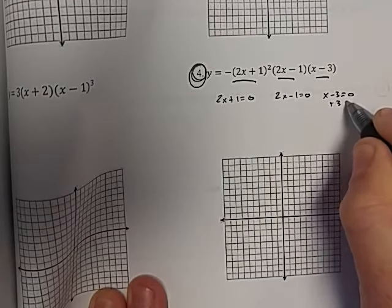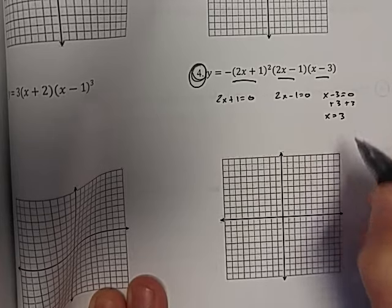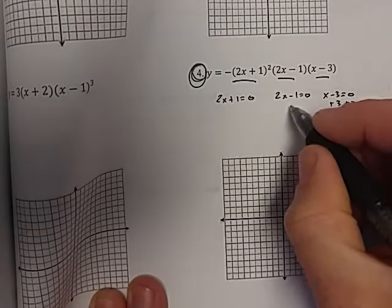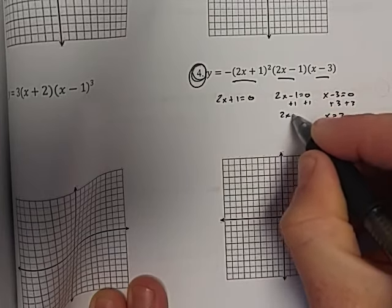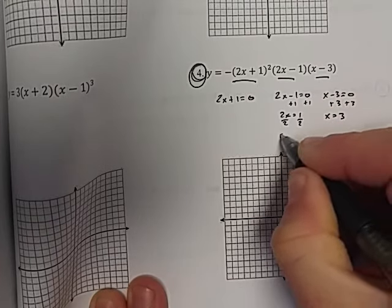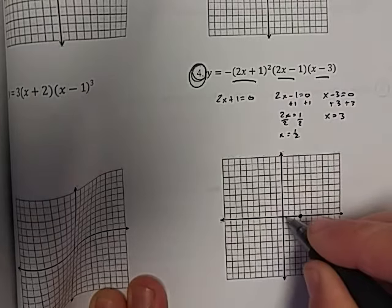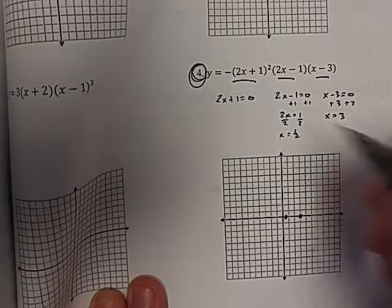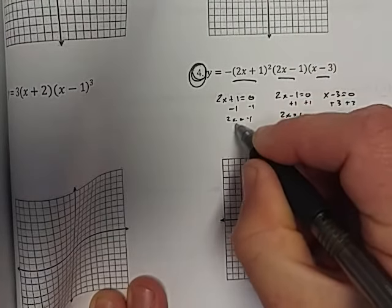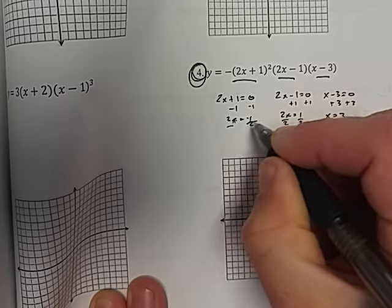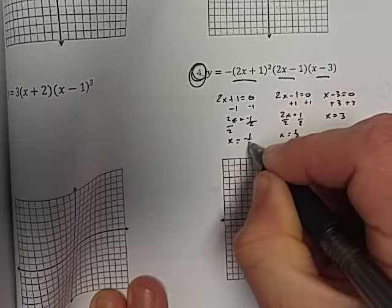And then this one's the easiest one to solve. So we're going to have one x-intercept on positive three, we're going to have one x-intercept on positive one half, and we're going to have one x-intercept on negative one half.